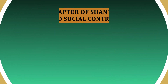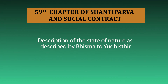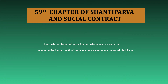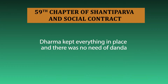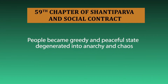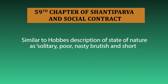The 59th chapter begins with a discourse on the state of nature. It was a state of absolute bliss and righteousness. Dharma kept everything in order and there was no need of danda. Gradually, however, moral decadence started. People became greedy. There was degeneration of the societal system. Anarchy and chaos reigned everywhere. This is quite similar to Hobbes' description of the state of nature as solitary, poor, nasty, brutish and short.